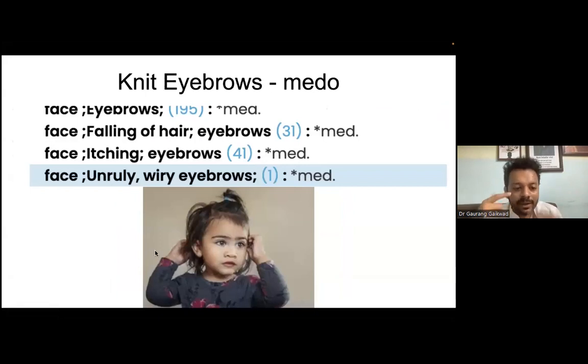Some children, very interestingly, you see the eyebrows are connected—there is hair in between the eyebrows like this. It's what we call knit eyebrows, which means it's like one line from here to here. Medorrhinum. Remember this is a typical indication of Medorrhinum, a miasmatic indicator.